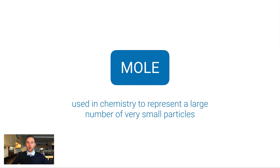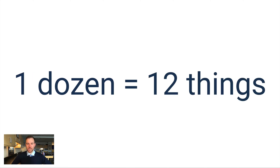It's used in chemistry to represent a large number of very small particles. Now, it's often so big that students have trouble wrapping their heads around how big this number actually is. Here's a way to think about it more easily: one dozen we all know is equal to 12 things — a dozen donuts, a dozen golf balls. It doesn't matter what the thing is; one dozen means 12.